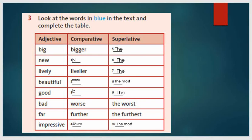Okay, the next exercise, exercise number three, we will do it together. Look at the words in blue in the text and complete the table. We previously studied comparative and superlative forms of adjectives, so filling this table shouldn't be difficult.